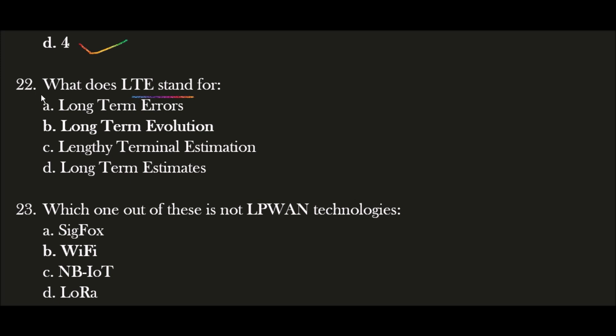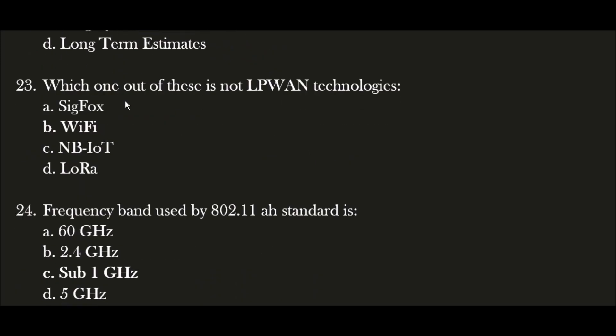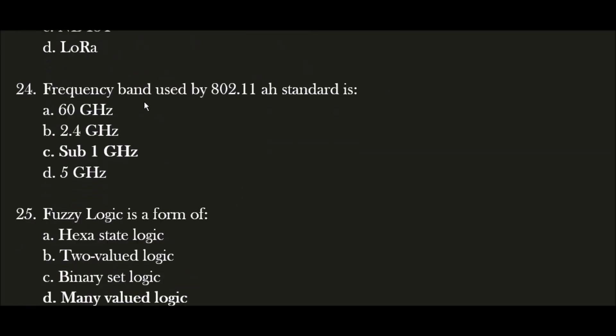Next question: What does LTE stand for? This is a very important question. The correct answer is option B — Long-Term Evolution. LTE stands for Long-Term Evolution. Next question: Which one of these is not an LPWAN technology? The correct answer is option B — Wi-Fi. Wi-Fi is not an LPWAN technology. Next question: What is the frequency band used by the 802.11ah standard? The correct answer is option C — Sub 1 GHz.